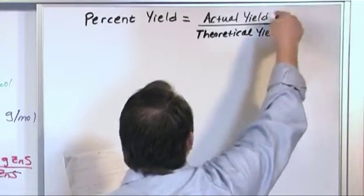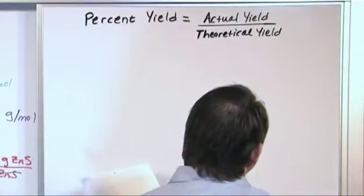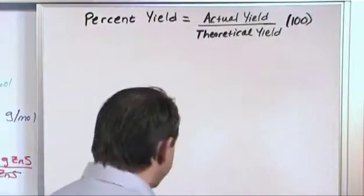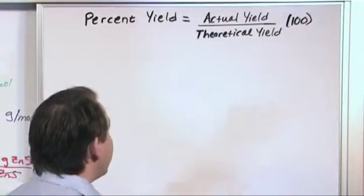Now when you take a number and divide by a number that's pretty close in size, you're going to get a decimal. So what you do is you multiply by 100 to make it a percentage. That's all you're doing. That's why we're multiplying by 100.